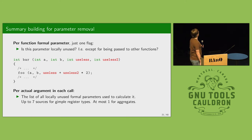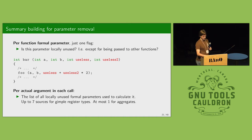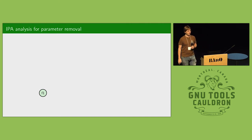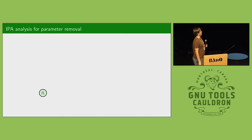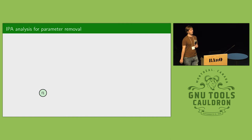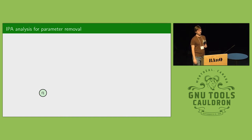For each actual argument we record up to seven scalar sources — the formal parameters used to calculate that actual argument. For aggregates we do just one, since there's no data flow and aggregates have fewer operations anyway. At the inter-procedural decision phase, the idea is very similar with two differences: multiple parameters can feed into one argument (slightly more complicated), and we traverse the call graph bottom-up from callees to callers — the opposite direction from return value removal.